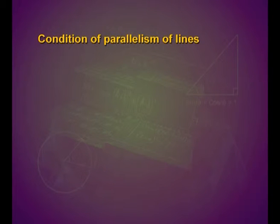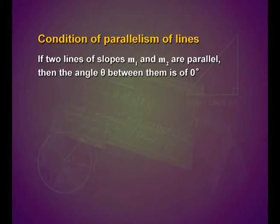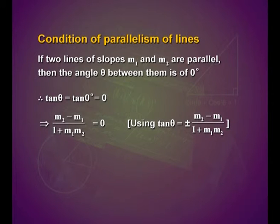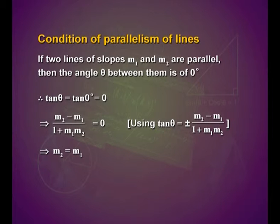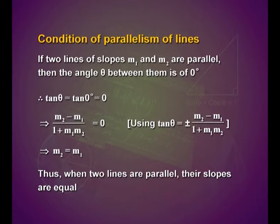Now let us look into the condition of parallelism of lines. If two lines of slopes m₁ and m₂ are parallel, then the angle theta between them is 0 degrees. Therefore, tan theta equals 0, which implies (m₂ minus m₁) upon (1 plus m₁ times m₂) equals 0. On simplification, m₂ minus m₁ equals 0, which implies m₂ equals m₁. Thus, when two lines are parallel, their slopes are equal.